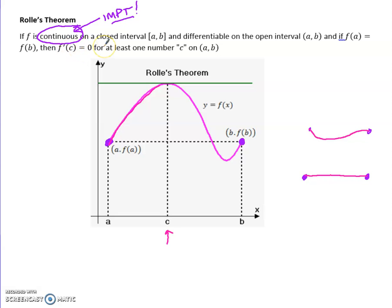The slope — the derivative at that point — has to be zero. In the top example, there's a place where the slope is zero because the curve went up and came back down. Right there the slope would be zero. Technically it's also zero at another point, but the theorem just guarantees at least one. On the other graph, there's a place where the slope is zero, and maybe even another — we're not sure, but there's definitely at least one.